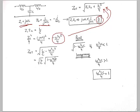Taking L/C common from under the square root, we get ZOT = √(L/C) · √(1 − ω²LC/4). The quantity √(L/C) will always be a real value since L and C are numerical quantities. The expression under the square root is real only if ω²LC/4 is less than 1 — if so, the entire square root is positive and real.